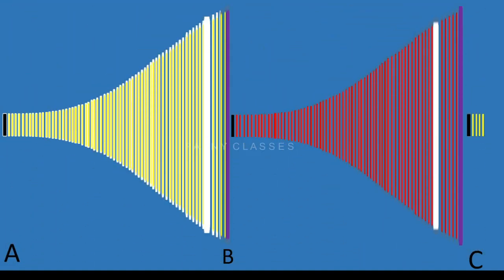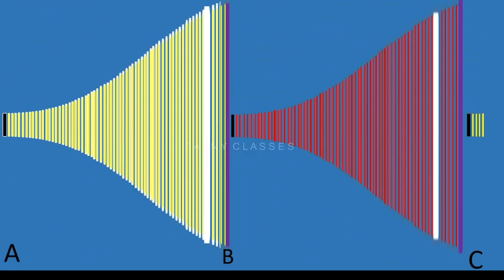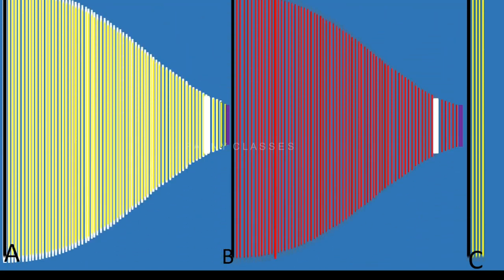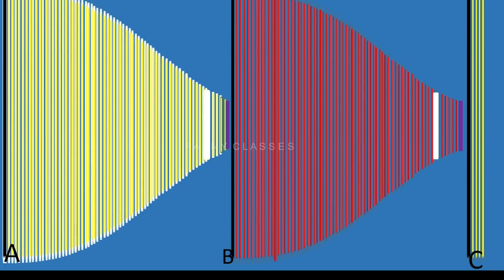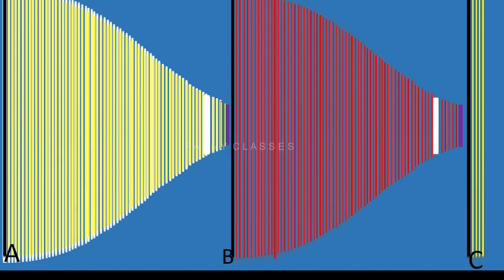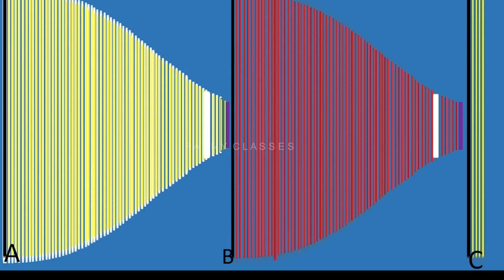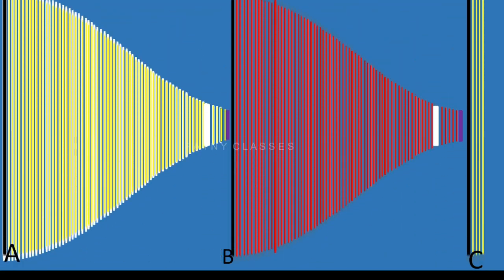In this vibration, particles A and B are consecutive particles in the same state of vibration. Particles B and C are also consecutive particles in the same state of vibration. However, particles A and C are not consecutive particles. So the distance between A and B is the wavelength, and the distance between B and C is also the wavelength. But the distance between A and C is not equal to wavelength, even though A and C are in the same state of vibration, because they are not consecutive particles.